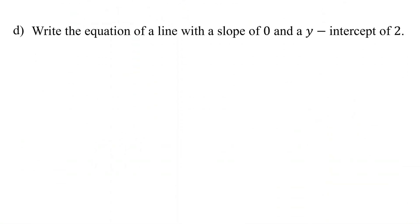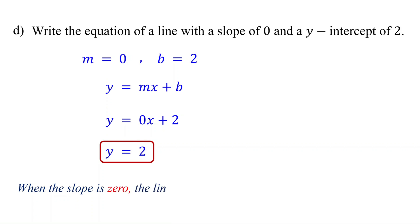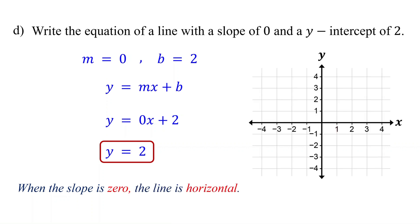What if the slope is 0? Since 0 times x is 0, this simplifies to y equals 2. This means y is always 2, regardless of x. When the slope is 0, the line is horizontal. So y equals 2 represents a horizontal line crossing the y-axis at 2.